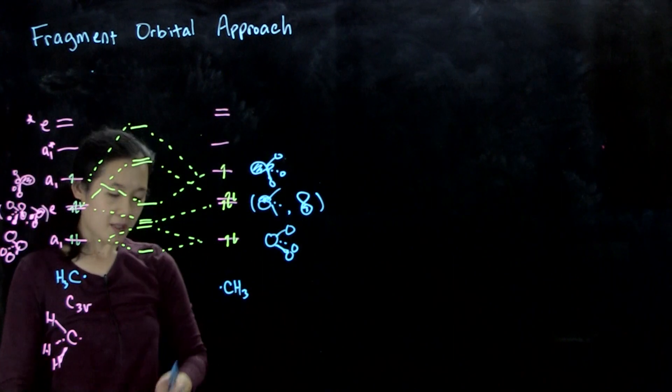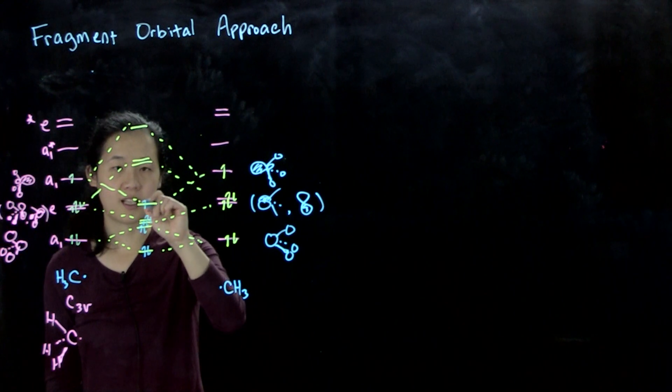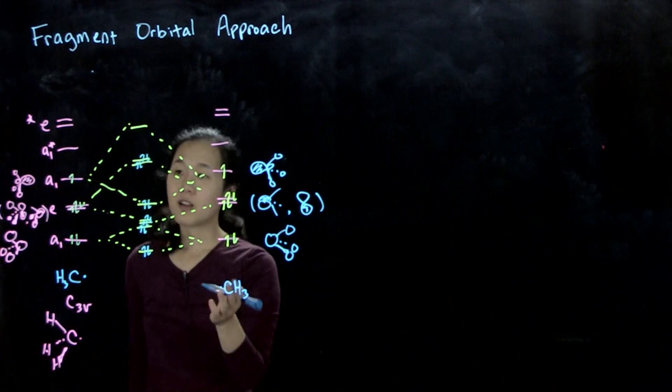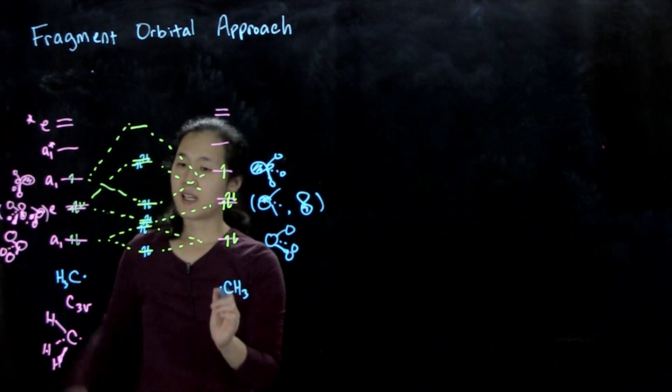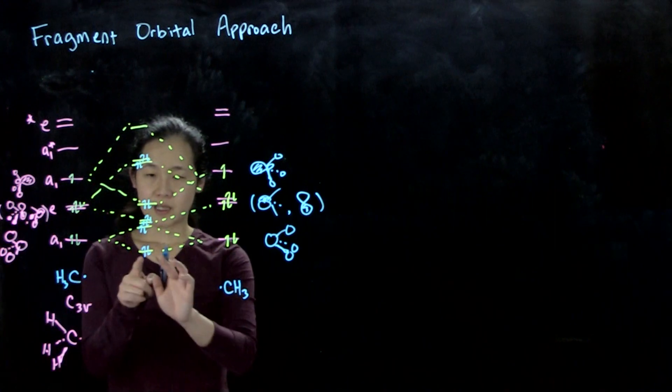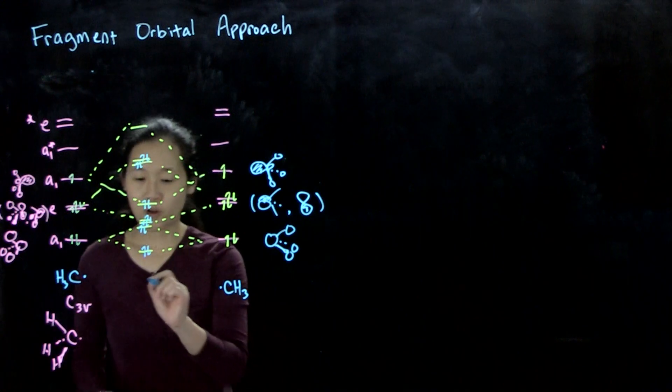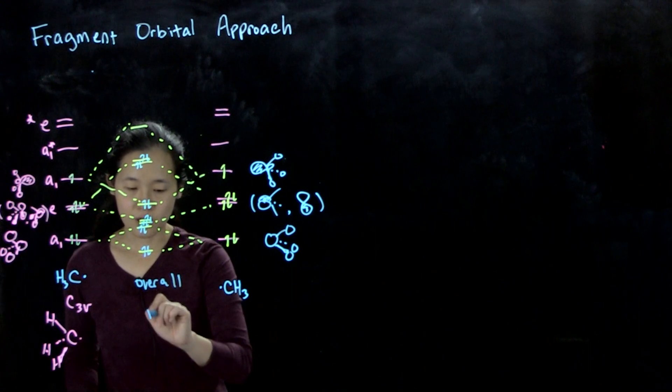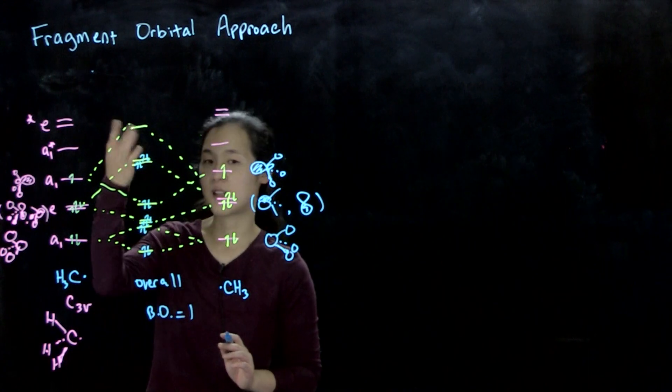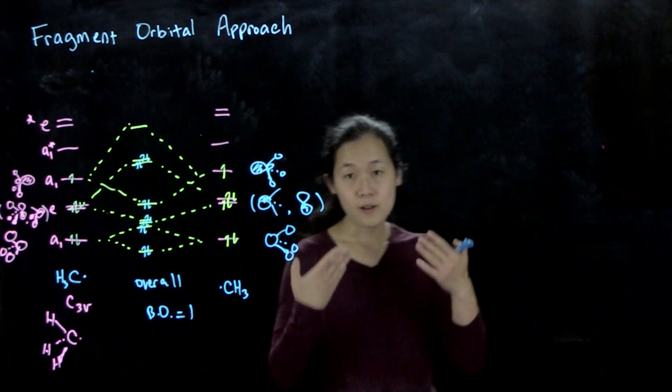Now we can fill in with electrons. We have 14 electrons total: one, two, three, four, five, six, seven, eight, nine, 10, 11, 12, 13, 14. These are our final MO diagrams. What you can see is that if we count the number of bonding-antibonding combinations—this is bonding-antibonding, this is bonding-bonding-antibonding-antibonding-bonding—so overall, our bond order equals one, because we have two electrons in bonding orbitals without the antibonding combinations. You can see that ethane is stable with a single CC bond.